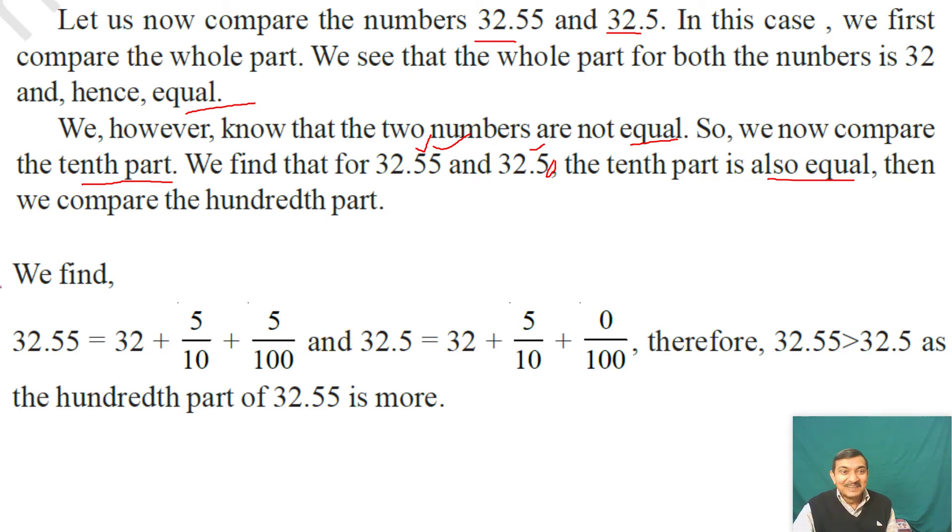We find that 32.55 means 32 plus 5 upon 10 plus 5 upon 100, using place value. But 32.5 means 32 plus 5 upon 10 plus 0 upon 100. So the whole and tenth parts are the same, but the hundredth part of 32.55 is more. Therefore, 32.55 is greater than 32.5.